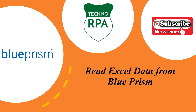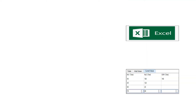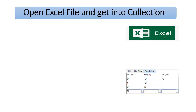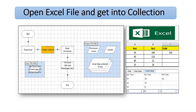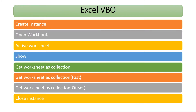Welcome to Techno RPA channel. Today we will learn how we can read Excel data from Blue Prism. In this session we will learn how to open an Excel file, and we will cover the Excel VBO with seven actions: Create Instance, Open Workbook, Activate Worksheet, Get Worksheet as Collection, Get Worksheet as Collection Fast, and Close Instance.